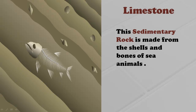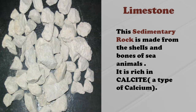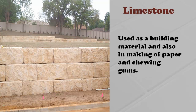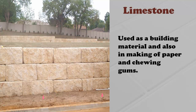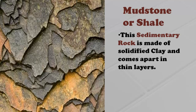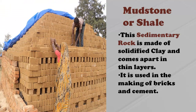Limestone is a sedimentary rock made from the shells and bones of sea animals. Thus it is rich in calcite, which is a type of calcium. Limestone is a very good building stone and is also used in making things like paper and chewing gum.